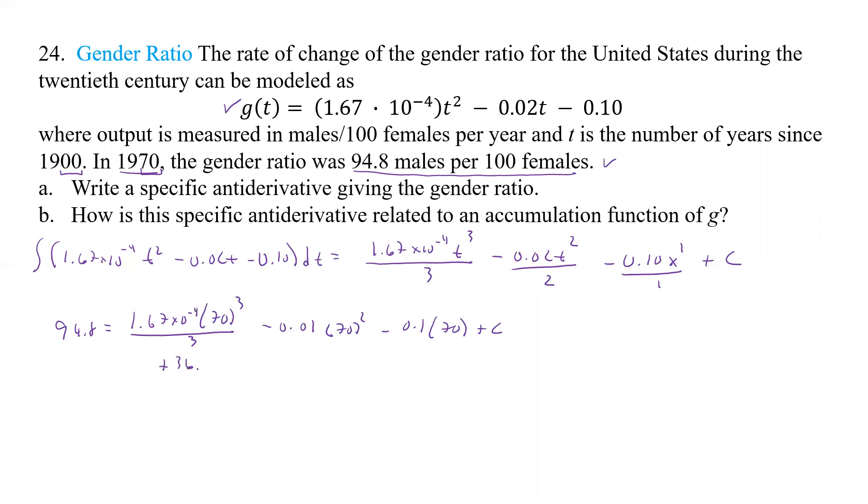So if I add 36.906 to both sides, basically everything but the C cancels. And so if I add that to 94.8, I get a positive 131.706 equals C.